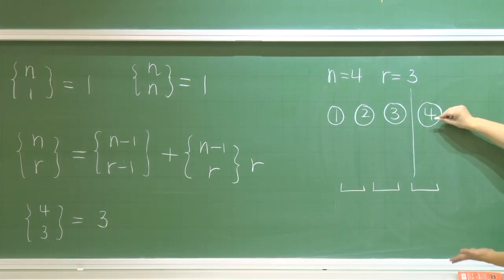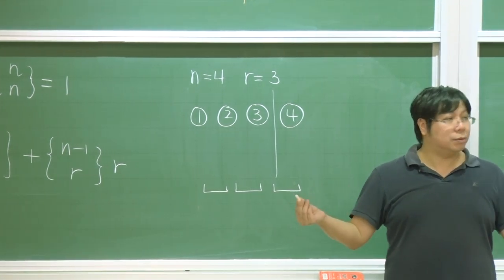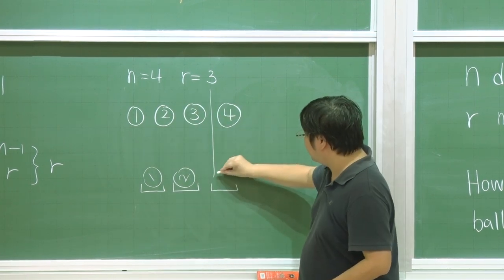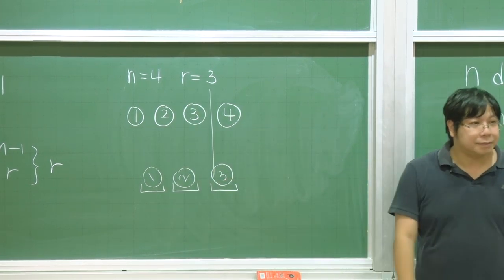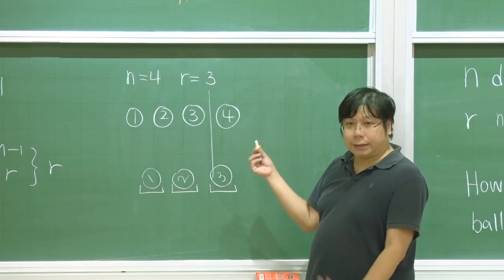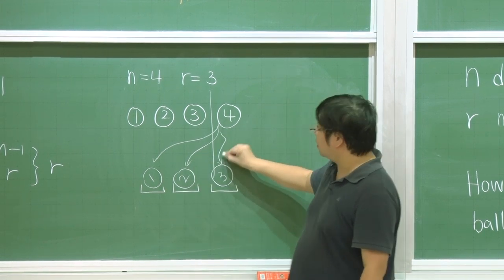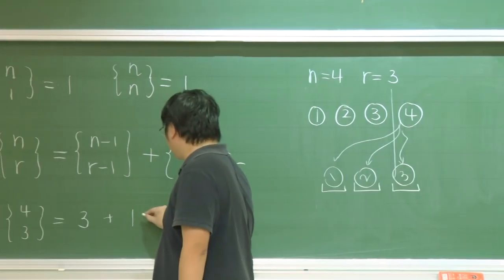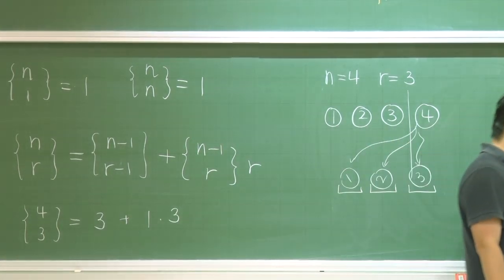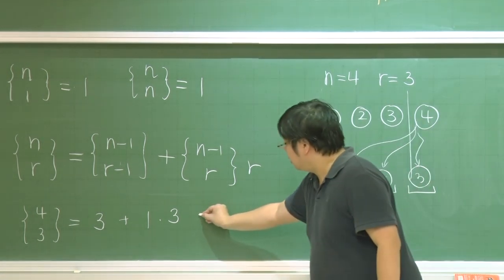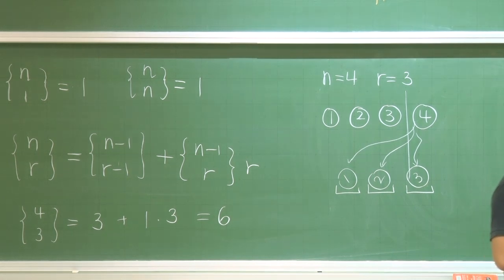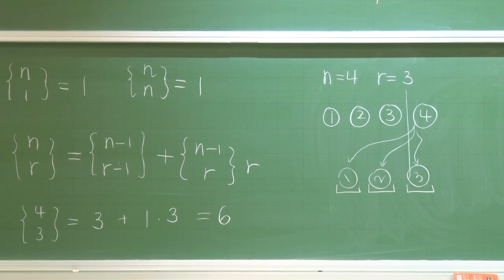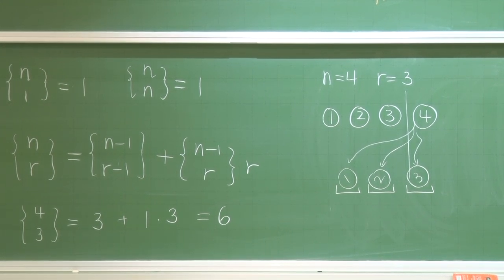For case two, ball 4 shares a box with others. Each of balls 1, 2, 3 already occupies one of the 3 boxes. Ball 4 can join box 1, box 2, or box 3 — so there are 3 cases, coming from 1 times 3. Combined, N(4,3) = 3 + 3 = 6.